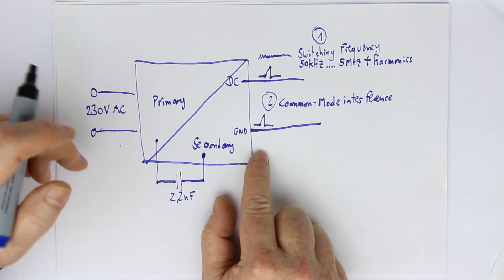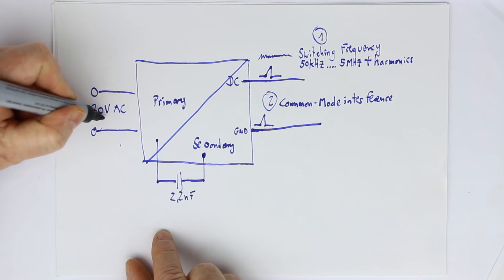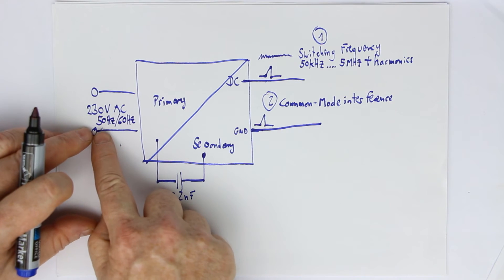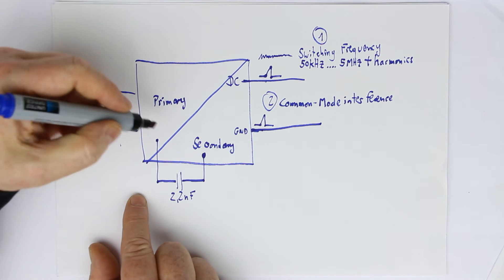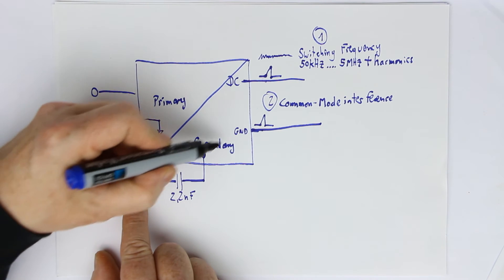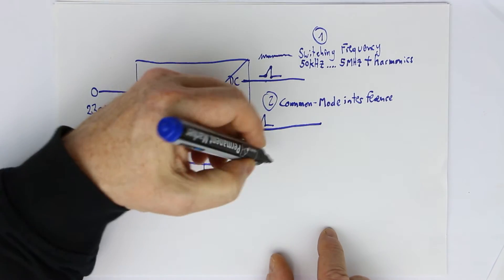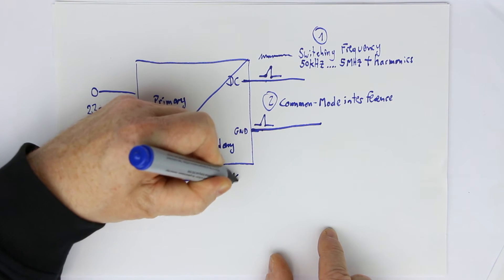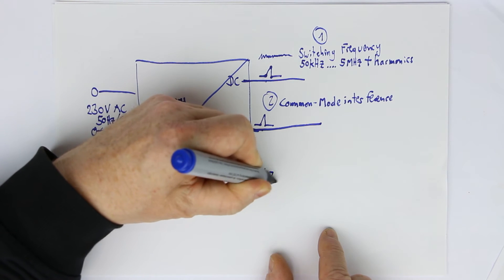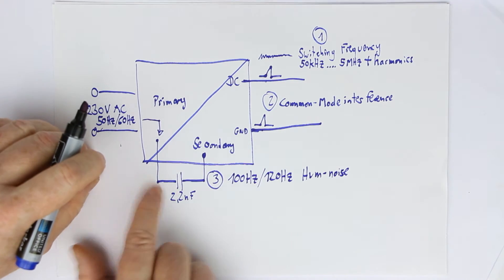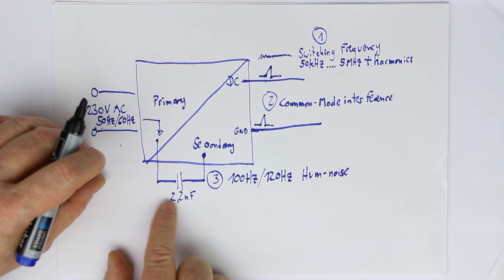Then you get 50 or, perhaps if you're living in the 60 hertz world, you get 50 or 60 hertz or, depending if it's already rectified, then it's 100 or 120 hertz. This mains frequency couples through this bridging capacitor to the secondary side. That's the third source of noise. In this case, it's hum. You get usually either 100 hertz or 120 hertz hum noise if your switch mode power supply has such a bridging capacitor.